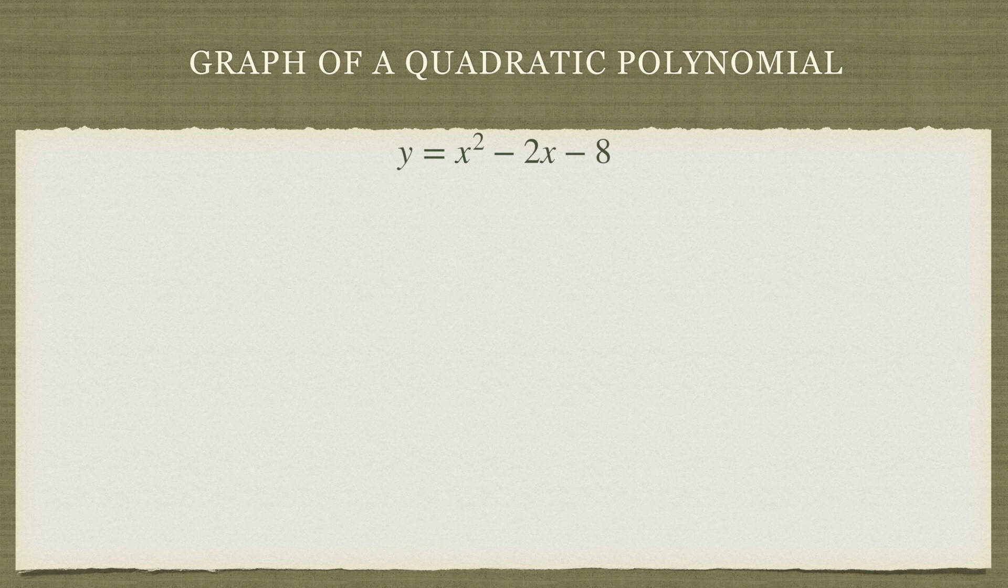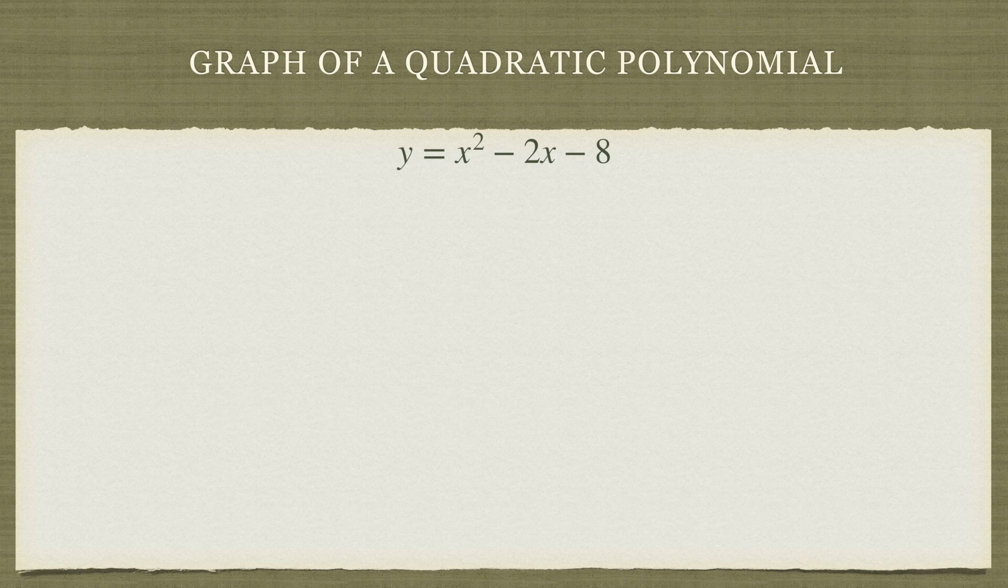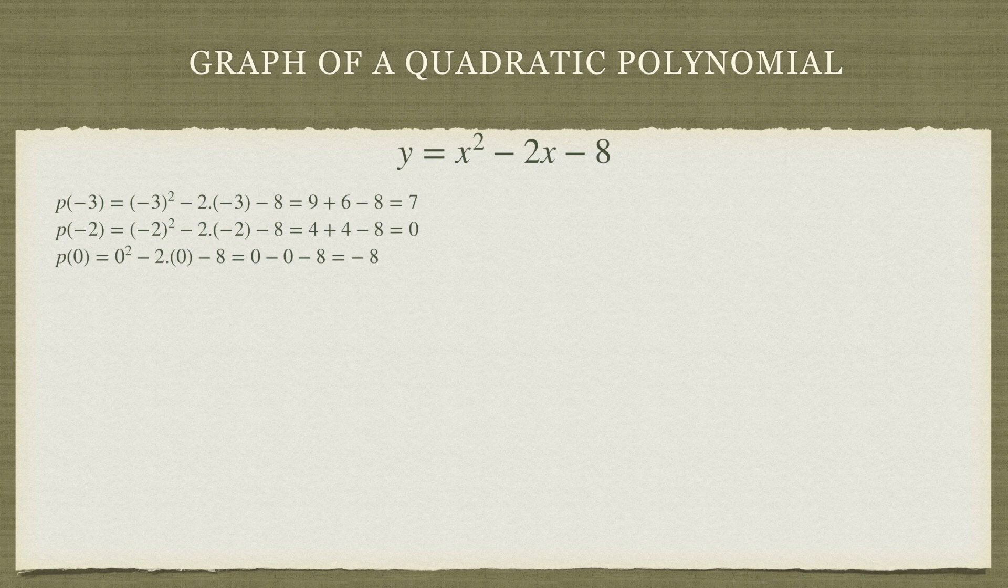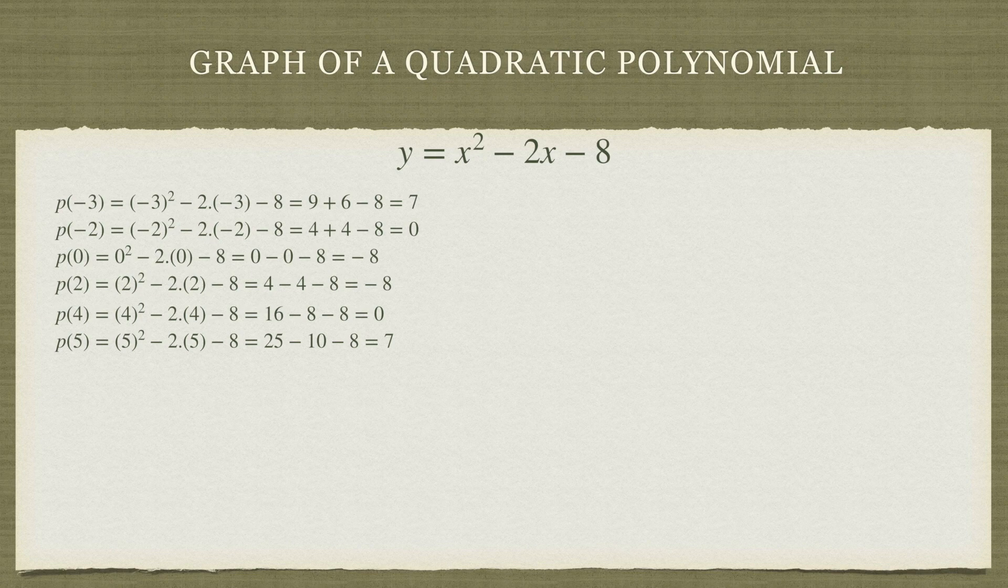Now we are going to take some arbitrary values of x and for each value we are going to find out the value of the polynomial. So here we have taken x equals minus 3, the value of the polynomial is 7. At x equals minus 2, the value is 0. For x equals 0, the value is minus 8. x equals 2, the value is minus 8. x equals 4, the value is 0. x equals 5, the value is 7.